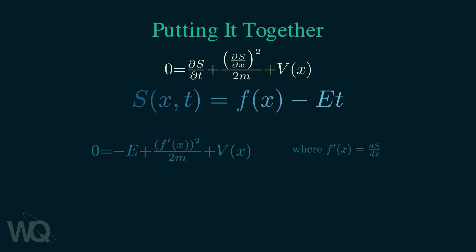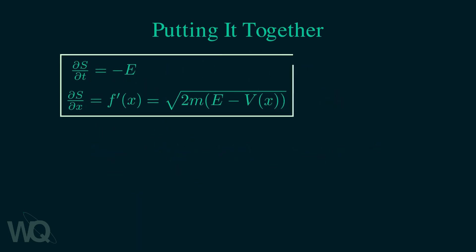From the ansatz, the time derivative is just minus E and the spatial derivative is F'. We can rearrange this equation to isolate F'. Then we have found both the derivatives of S. Finally, we have the expression for the velocity of the wavefront.